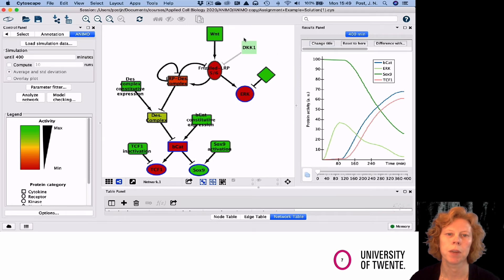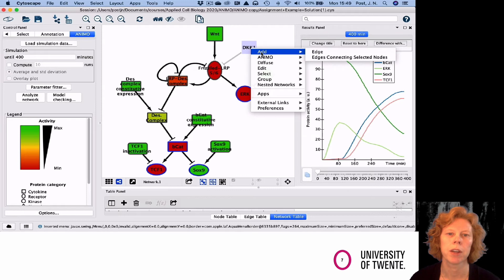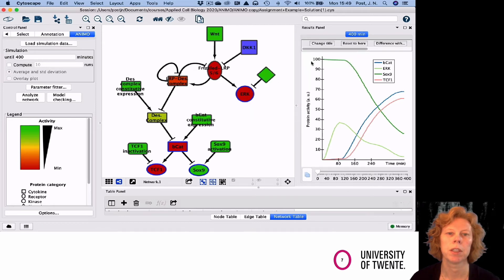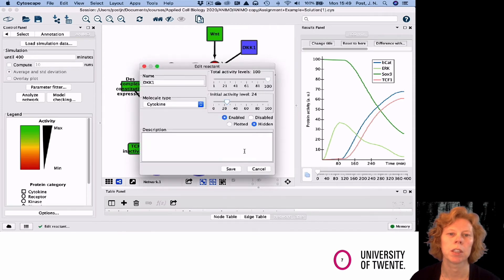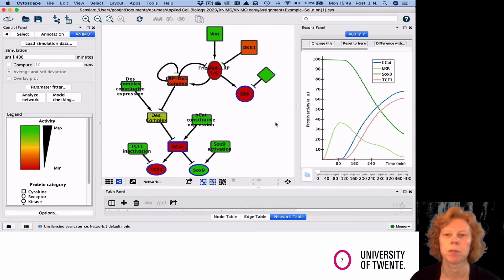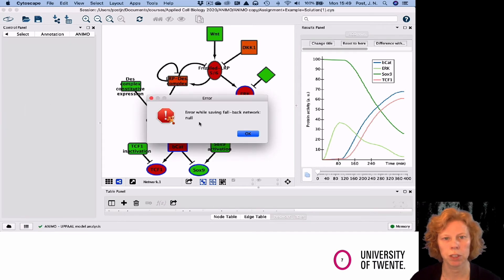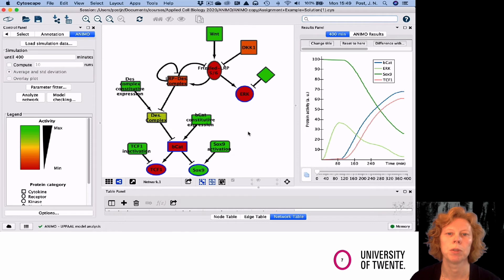What I see now is that I want to optimize my network, including DKK1. So I have to right-click and then enable DKK1, which is part of my network. I want to set the starting activity around 25. So I changed the network, so I need to do a new simulation.